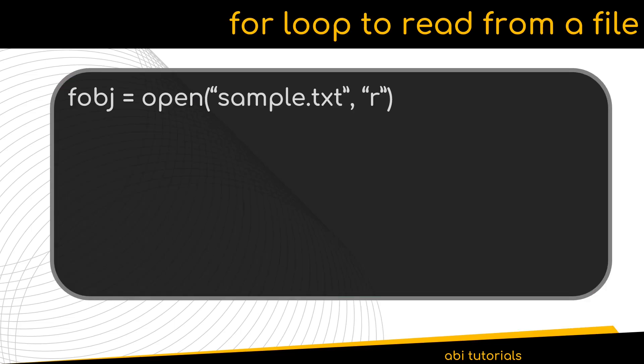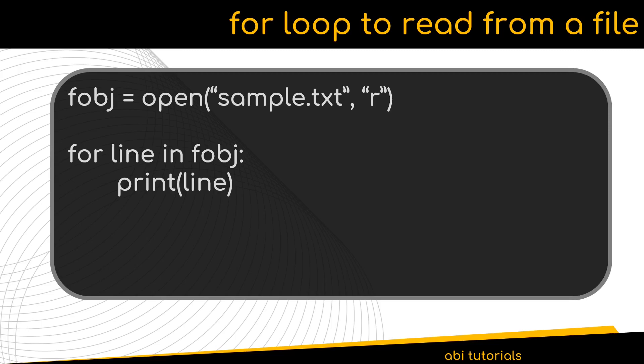There is one more way to read from a file which is memory efficient and easy to use: using the for loop. For example, open a file named sample.txt in read mode, then use the for loop syntax where line is a single line from the file and fobj is the file object. The loop continues until there is no more content in the file. This is a simpler way to read from a text-based file rather than using a while loop and the readline function.